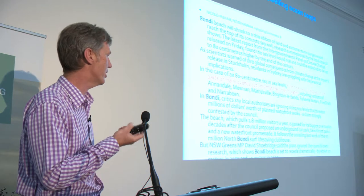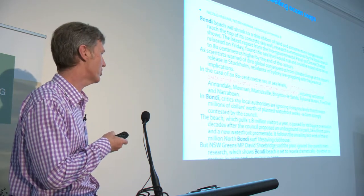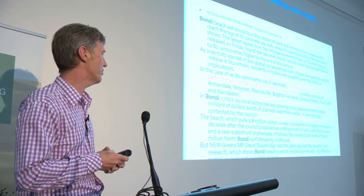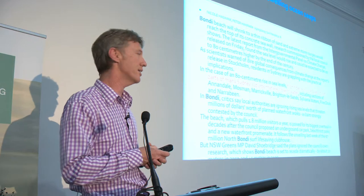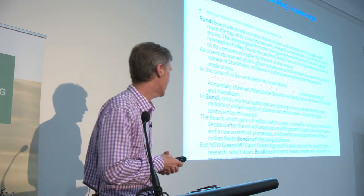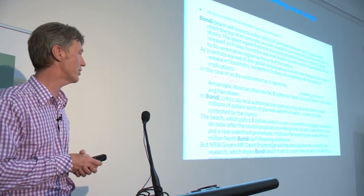Bondi Beach is iconic — it pulls in 1.8 million visitors a year — and they're going to do a new $7 million North Bondi development: a life-saving clubhouse. But a member of the New South Wales Parliament, David Shoebridge for the Greens, said the council's own research shows that Bondi Beach is set to recede dramatically — by about 20 metres by 2050 and 45 metres by 2100. The siting of this facility, according to David Shoebridge, ignores those own plans. This is current 2013, but that facility, you'd imagine, is going to be here in perhaps 2050. What will it look like by that stage? Not taking into account storm surges and other ways in which that piece of infrastructure could be vulnerable.